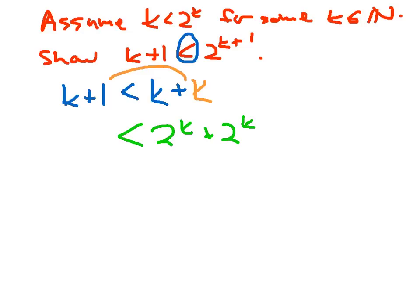Well, 2 times 2 to the k, that's the same thing as 2 to the first times 2 to the k, and this is equal to 2 to the k plus 1. Now that actually ends the proof.